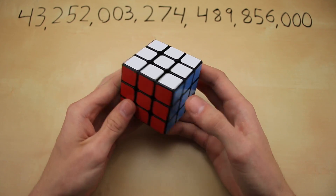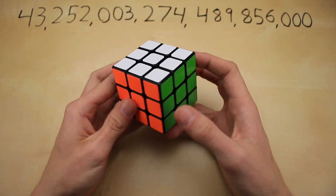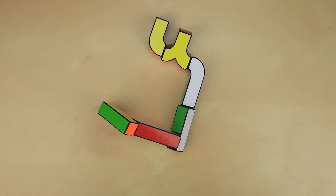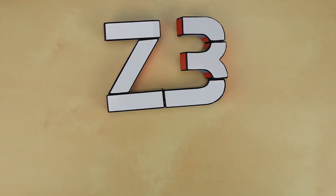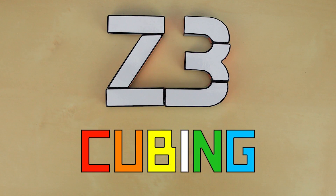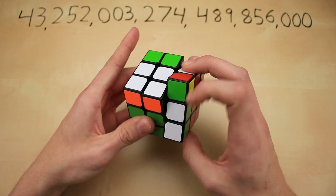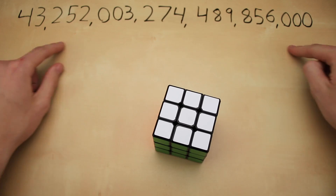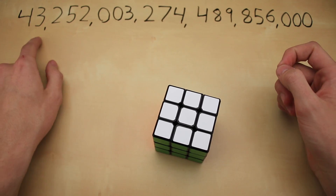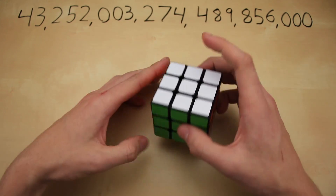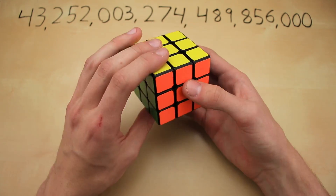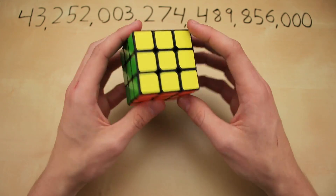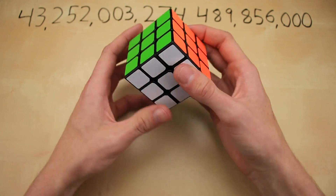Hey guys and welcome back to Z3Cubing. Today I'm going to show you how to calculate the number of possible positions on the Rubik's Cube. If you've been into Rubik's Cubes for any reasonable length of time, you've probably come across this number before. It's commonly called 43 quintillion, and it represents the number of possible positions of the Rubik's Cube — the number of positions you can create by turning the sides.